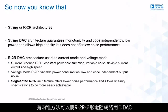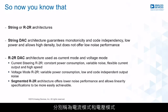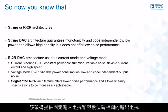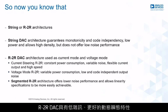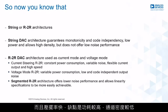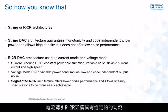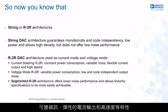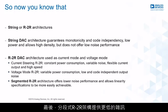There are two ways in which the R-2R ladder network may be used as a DAC: current mode and voltage mode. This architecture offers fixed input impedance and a code-dependent output impedance. R-2R DACs offer low noise and better dynamic transients, lower glitch energy with small settling time and fast slew rates, but at the expense of higher power and lower channel density. The current steering R-2R architecture offers constant power consumption, variable noise, and flexible current outputs at high speed. The voltage switching mode features variable power consumption and low code-dependent output noise. Segmented R-2R architecture offers lower noise performance and allows linearity specifications to be more easily achievable.